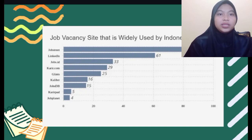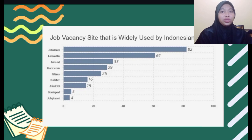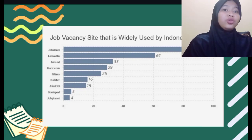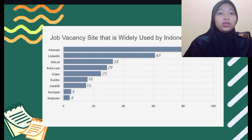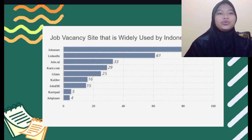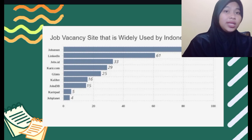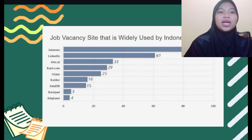There are many job vacancy sites widely used by Indonesian job seekers. In first place, Jobstreet is used by 82% of job seekers in Indonesia. In second place is LinkedIn, used by 61% of Indonesians. Then there is Job.id, used by 33% of job seekers. Karir.com has 29% of job seekers accessing it. Kalibrr has a percentage of 16% and JobsDB has 15%. Another 4% of job seekers access CareerPad sites and another 4% access Jobplanet sites.